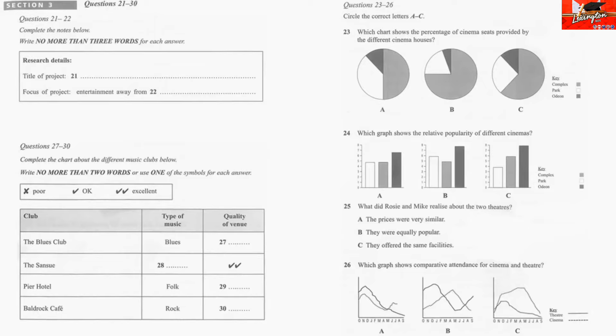In this section, you will hear a discussion between two students, Rosie and Mike, and a university tutor. In the first part of the discussion, they are talking about a survey they have conducted on local entertainment. First, look at questions 21 to 26. Now listen to the first part of the discussion and answer questions 21 to 26. Good morning, everyone. Well, I think we can start straight away by getting Rosie and Mike to do their presentation. Would you like to start, Rosie? Yes.